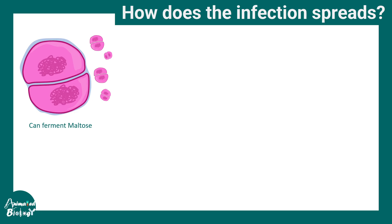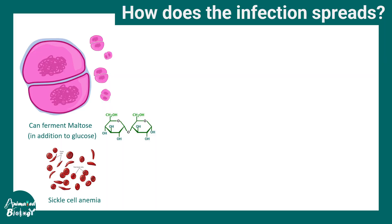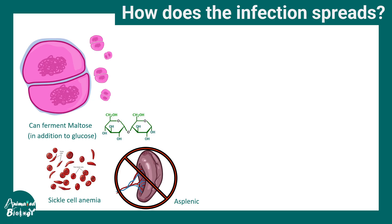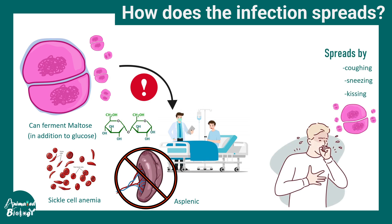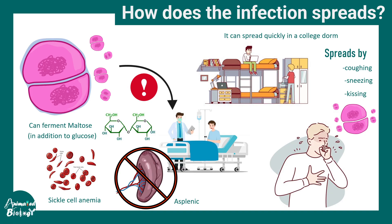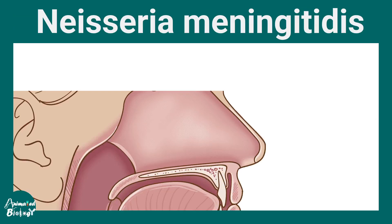How does the infection of Neisseria meningitidis spread? These bacteria differ from other meningococci because they can ferment maltose alongside glucose. People with sickle cell anemia and asplenic conditions are more susceptible. The infection is spread by coughing, sneezing, and kissing — it is a droplet infection — and spreads quickly in crowded areas such as college dorms.